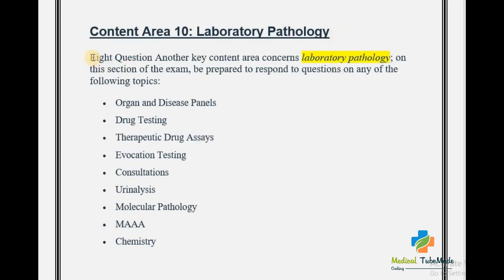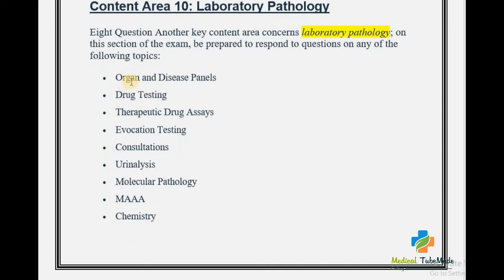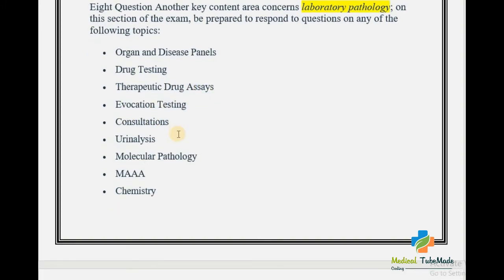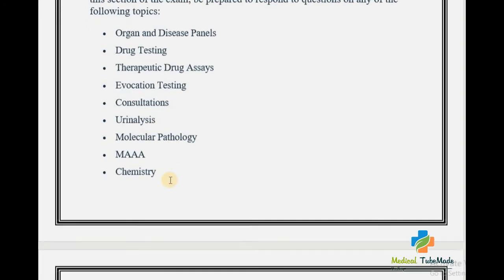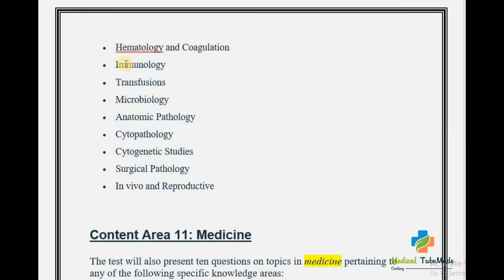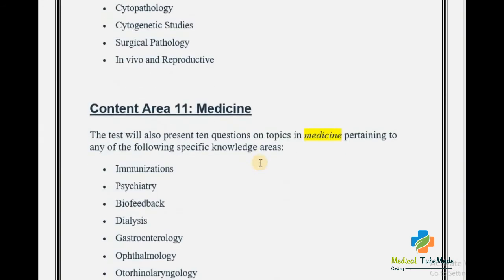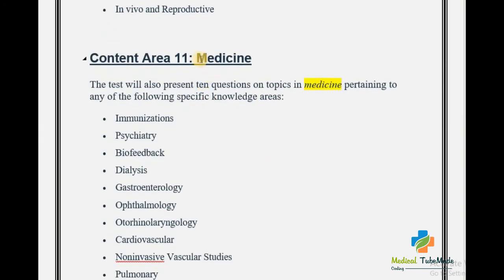Content Area 10 is Laboratory and Pathology. You can expect 8 questions. Be prepared to respond to questions on organ and disease panels, drug testing, therapeutic drug assays, evocative testing, testing consultation, urinalysis, molecular pathology, MAAA, chemistry, hematology and coagulation, immunology, transfusion, microbiology, anatomic pathology, cytopathology, cytogenetic studies, surgical pathology, in vitro and reproductive codes.